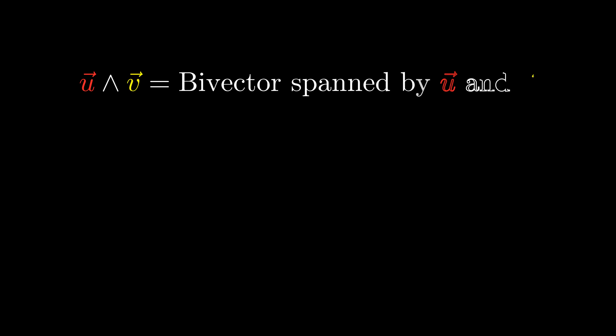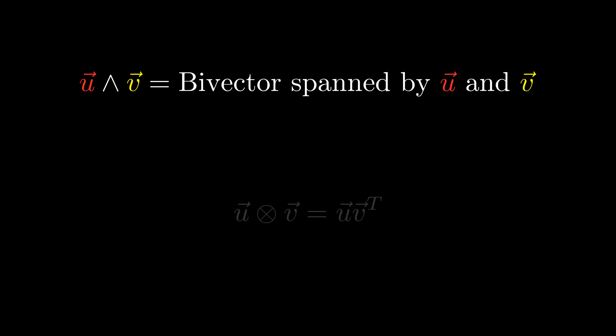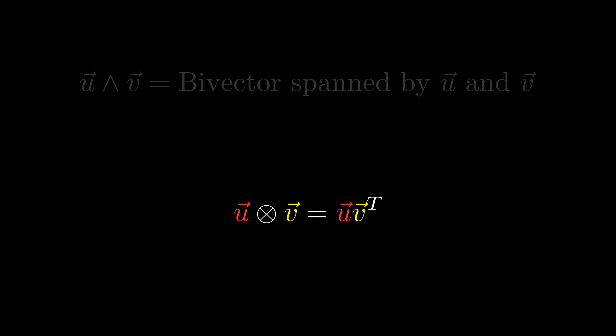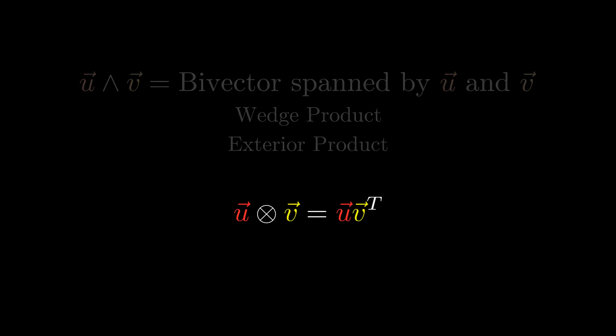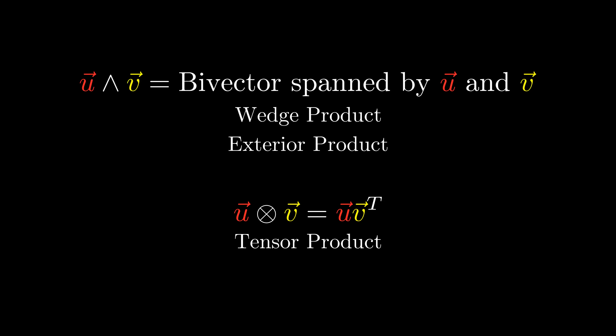The first thing I want to say is that many people confuse the outer product that I gave with another operation commonly called the outer product. These two operations are not the same and have little to do with each other. The geometric algebra outer product takes in two vectors and produces a bivector, while the other outer product takes in two vectors and produces a matrix or a tensor. Some people distinguish between the two by calling the GA outer product the wedge product or the exterior product, while the other outer product is just a special case of the tensor product. I still prefer the name outer product for the GA operation for reasons I'll give later in this video.